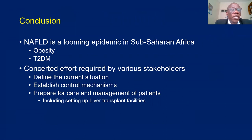In conclusion, NAFLD is a looming epidemic in Sub-Saharan Africa because of the increasing prevalence of obesity and type 2 diabetes mellitus. Concerted efforts will be required by various stakeholders to define the current burden of this condition and establish control mechanisms. Finally, preparation for care and management of patients should this epidemic strike — including setting up liver transplant facilities — is critical, though very expensive and most Africans would not be able to afford this kind of treatment.